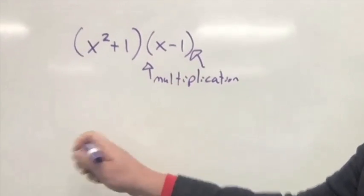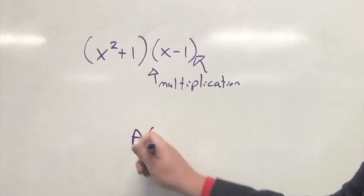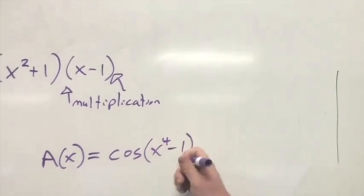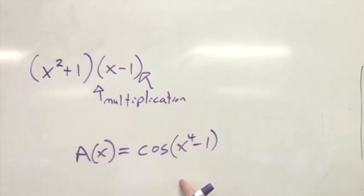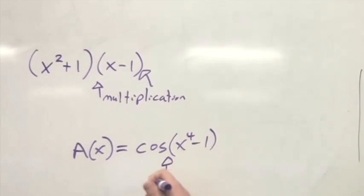But if you are writing a function, that doesn't mean multiplication. So if I say A of x is equal to cosine of x to the fourth minus 1, this isn't cosine times x to the fourth minus 1. This is cosine of x to the fourth minus 1.